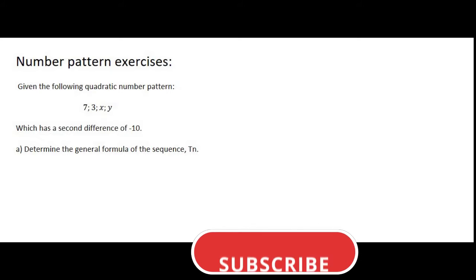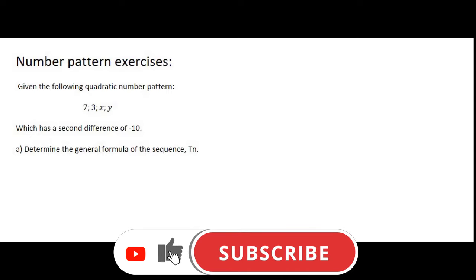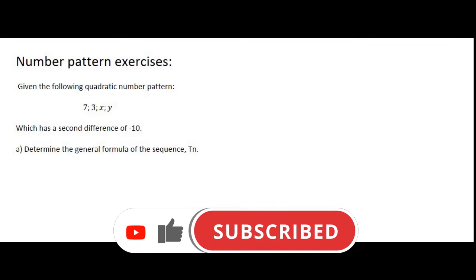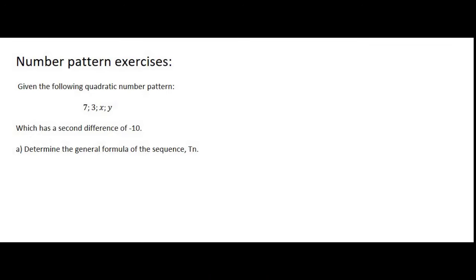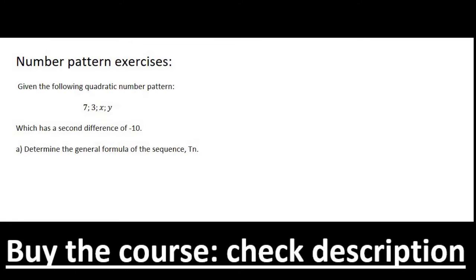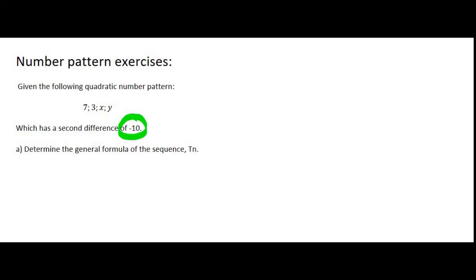In this video, we're going to look at a quadratic number pattern that has variables such as x and y. In the question, they've told us that this number pattern has a second difference of minus 10 that we can see over here.